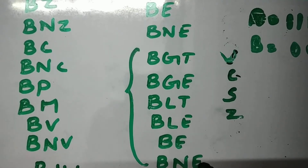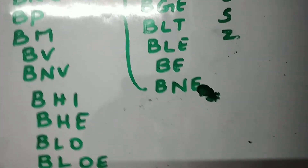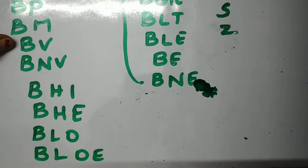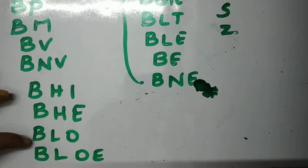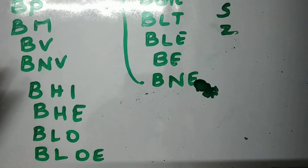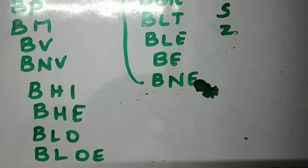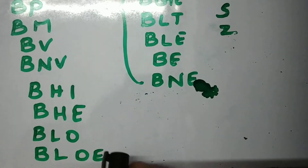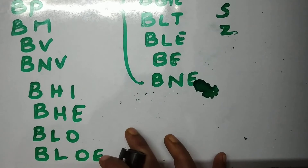Branch if overflow and branch if not overflow complete the set of instructions based on status register bits. Next, we have another set: branch higher, branch higher or equal to, branch lower, branch lower or equal to, branch equal to, and branch not equal to. These branch instructions are used for comparing any two operands, and they are particularly suitable for unsigned values.